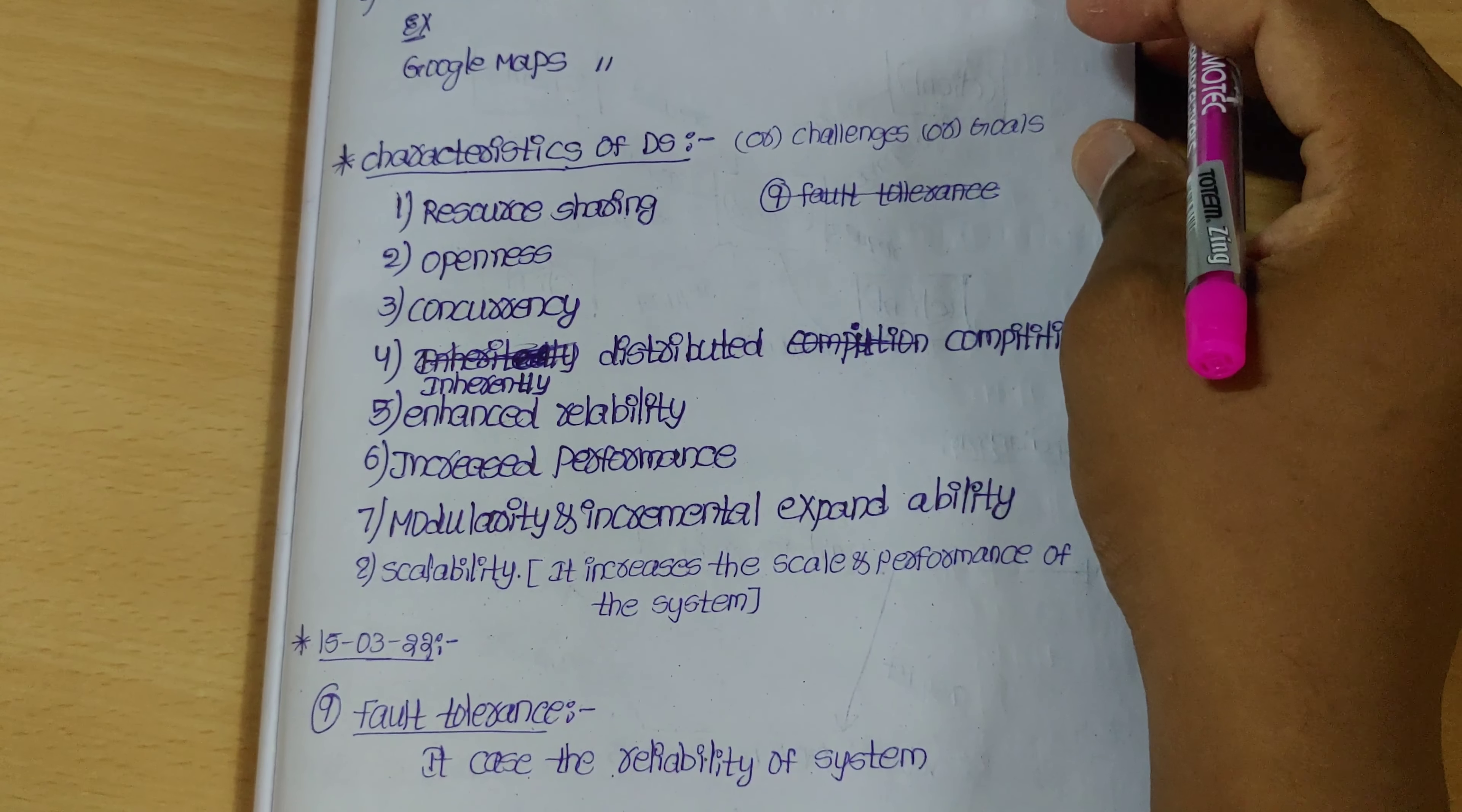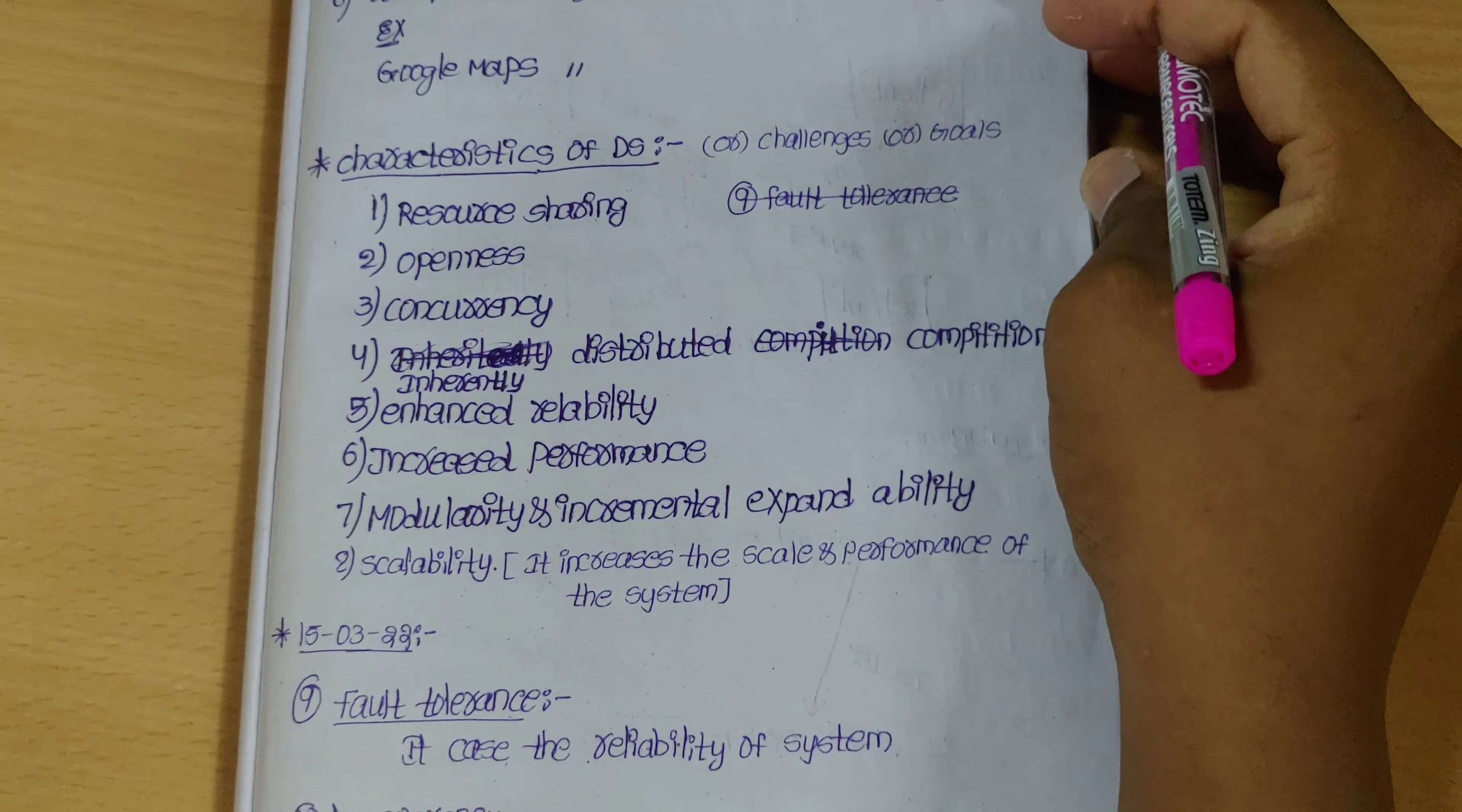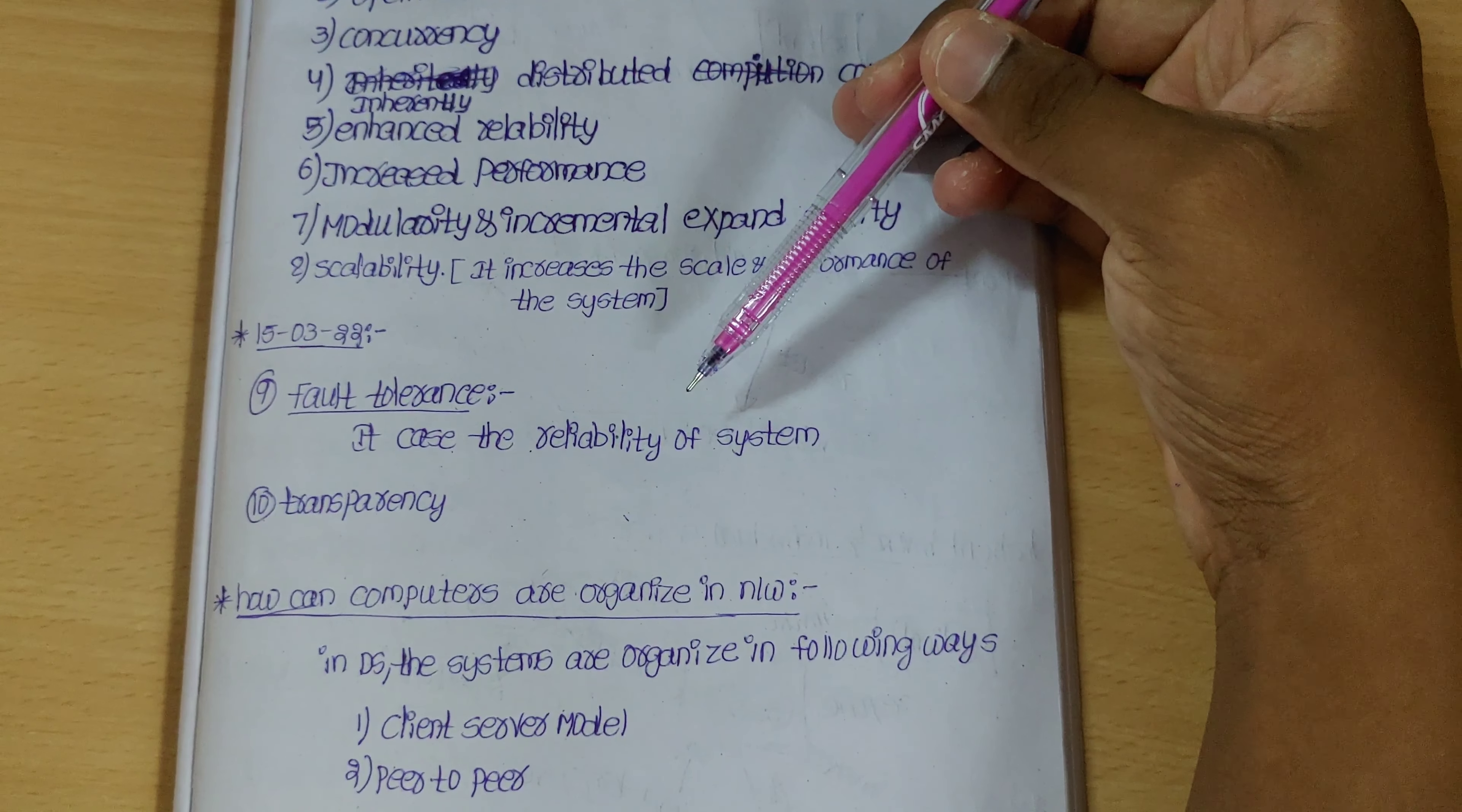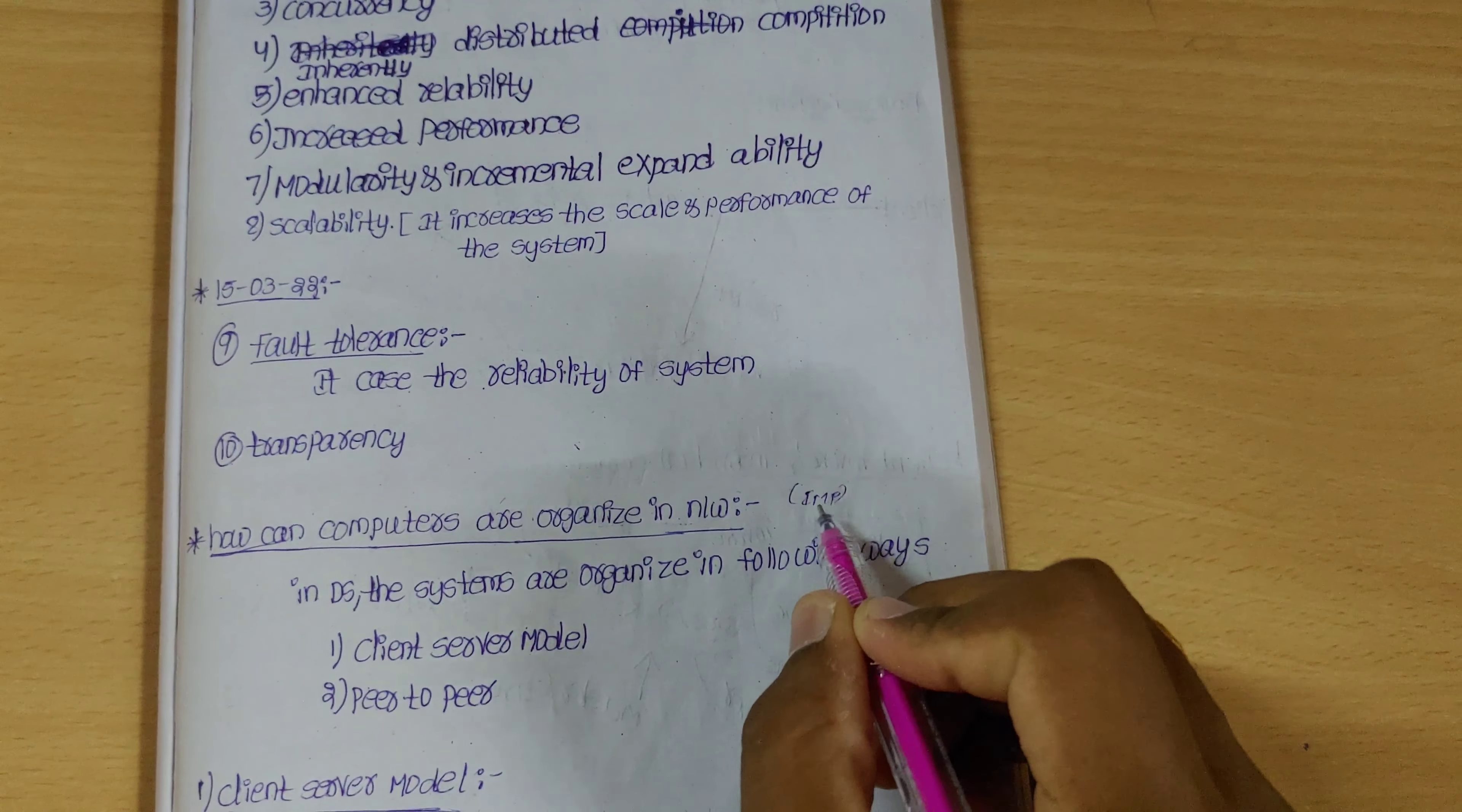After completing all prioritized tasks, our task is complete. Scalability increases the scale and performance of the system. There's also fault tolerance and transparency. Fault tolerance means the system is reliable - 100% accuracy condition. How can computers organize in networks?